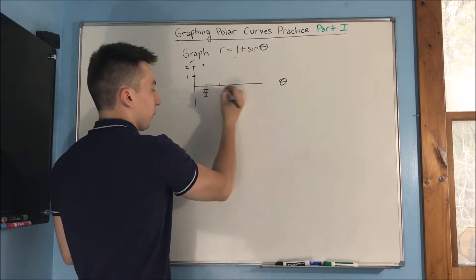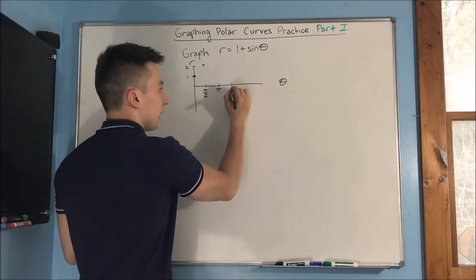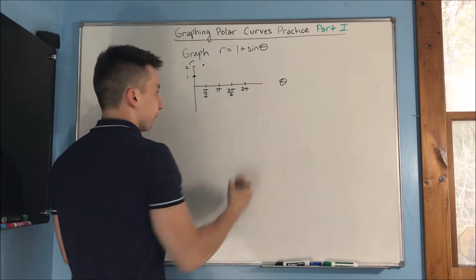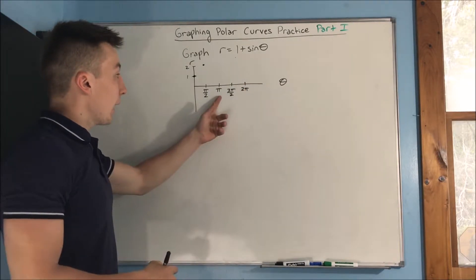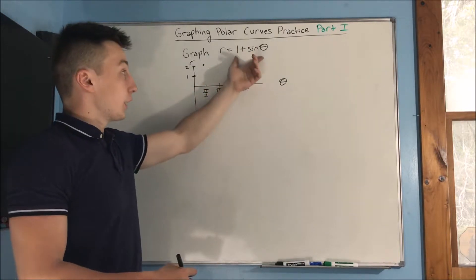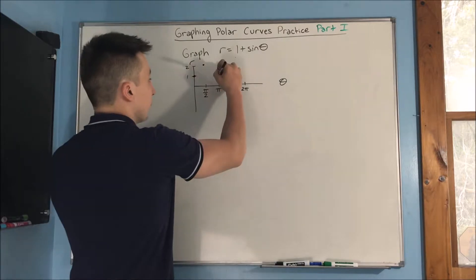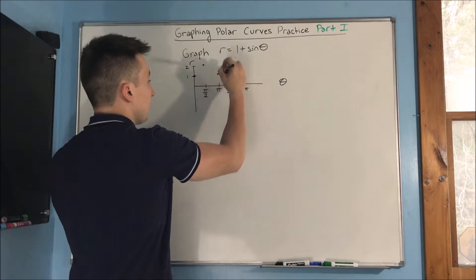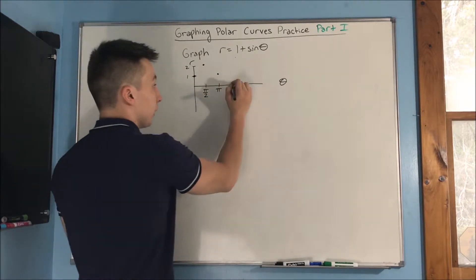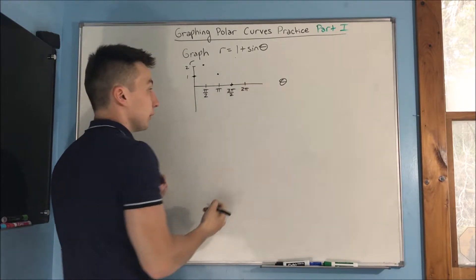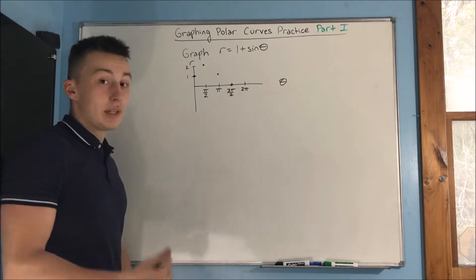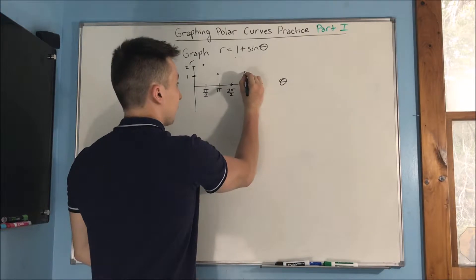The next points are going to be pi, then 3 pi over 2, and then 2 pi. When we have pi, that's just 1 plus sine of pi, which is just going to be 1. Then 1 plus sine of 3 pi over 2 is going to be 0, because sine of 3 pi over 2 is negative 1. And lastly, with 2 pi, that's just going to be the same point as when we had 0 — it goes back up to 1.